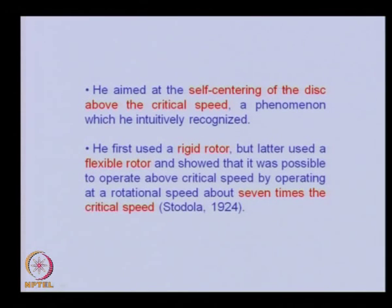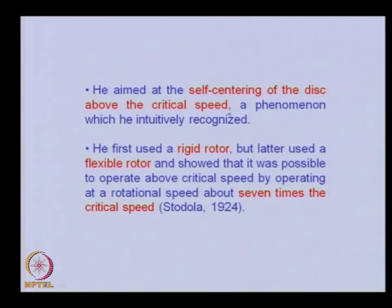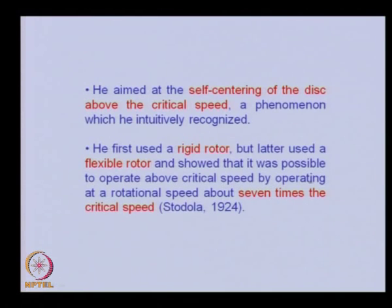Similarly, in 1883 Swedish engineer De Laval developed a single stage impulse steam turbine named after him for marine applications, and succeeded in operating it at 42,000 RPM — very high speed at the time. He aimed at self-centering of the disc above the critical speed, a phenomenon he intuitively recognized, which contradicted Rankine's prediction. He first used a rigid rotor, but later used a flexible rotor and showed it was possible to operate above critical speed at a rotational speed about 7 times the critical speed.